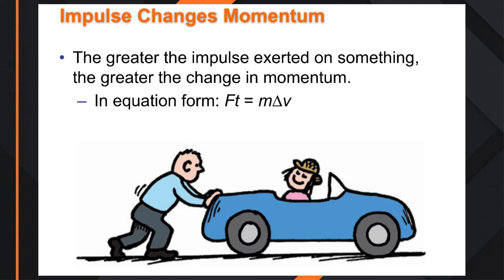The greater the impulse exerted on something, the greater the change in momentum. If we have a car being pushed, you can only apply a certain amount of force. If you apply that force over a very small period of time, the mass stays the same but the velocity will be small. But if you impart that same force over a longer period of time, the mass stays the same and the velocity gets bigger. The greater the time frame you apply force, the greater the velocity.